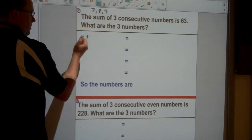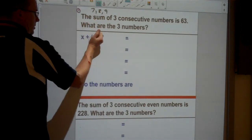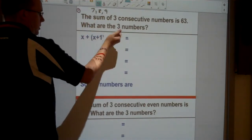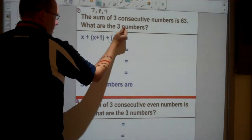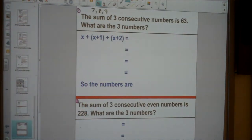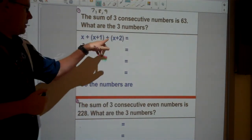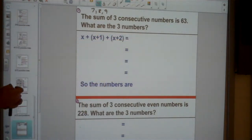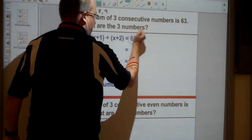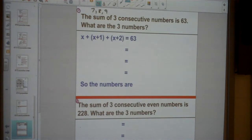Now I don't know my first number, so I'm just going to call it x. But one more than that would be my next number. And one more than that would be my next number. And I'm going to add all of them together. If it said the sum of four consecutive numbers, then the next number would just be x plus 3. It says equals 63.